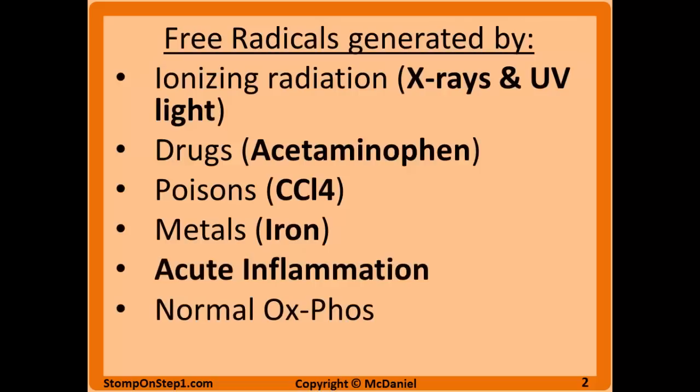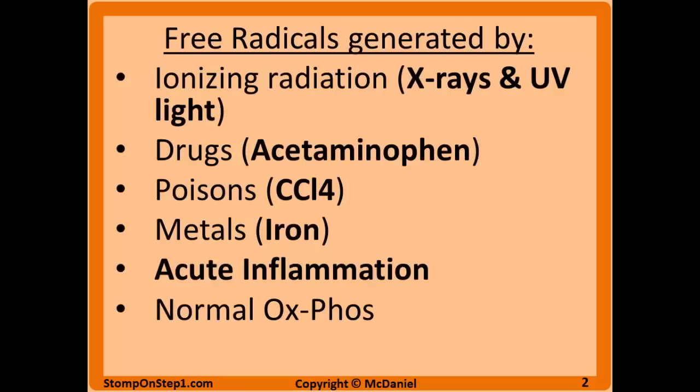Free radicals are also naturally generated in the body by certain enzymes. In this case these free radicals aren't bad — we need these free radicals. For example, neutrophils use free radicals during the acute inflammation process to destroy things like bacteria. Normal oxidative phosphorylation in the mitochondria also produces free radicals.